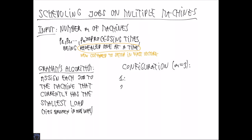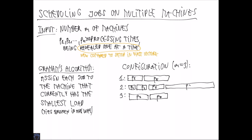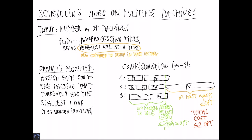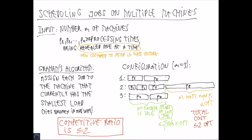Consider a particular configuration with M equals 3. The first three jobs are put on separate machines, and then we always put the next job on the least loaded machine. To analyze this, we consider the starting time of the longest running job. Before this time, no machine can be idle. So the starting time is at most the average processing time, which is an upper bound by OPT. Also, the length of the longest job is at most OPT. So the total cost is at most 2·OPT — that is, the competitive ratio is bounded by 2.